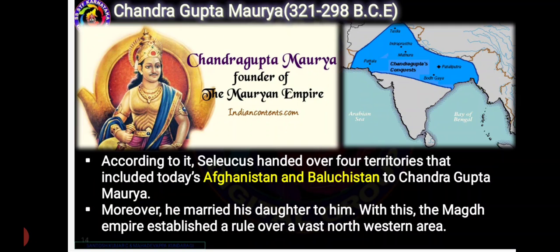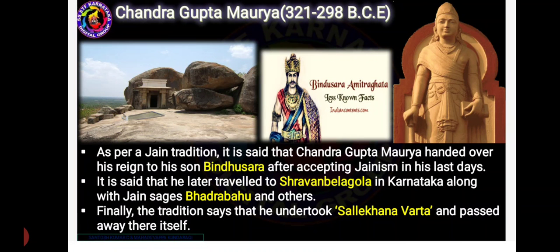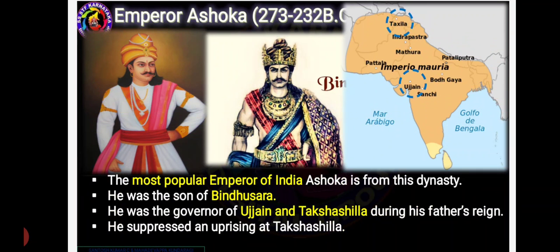Not only that, Chandragupta also married Seleucus's daughter, which helped him to have a vast area extending to the northwest. Jain tradition says that Chandragupta handed over his power to his son Bindusara, travelled to Sravana Belagola, took Salekana Vrata and died there. Emperor Ashoka, the son of Bindusara, was a famous ruler from this dynasty.